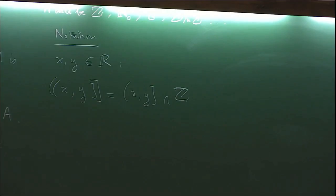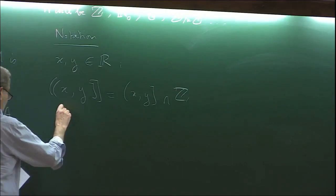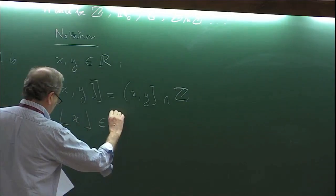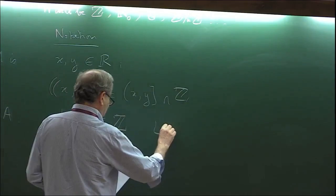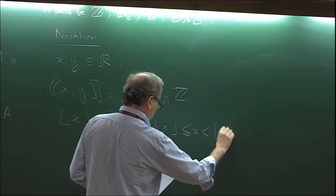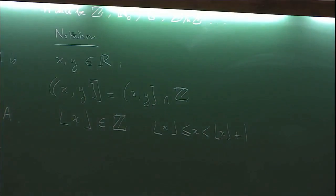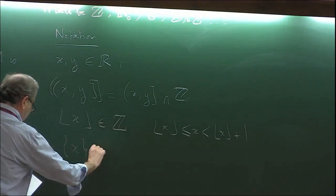For X in ℝ, the floor notation: the floor of X is the integer satisfying ⌊X⌋ ≤ X < ⌊X⌋ + 1. For example, the floor of 2.3 is 2, and the floor of an integer is itself. Also of interest is the fractional part: {X} = X − ⌊X⌋.